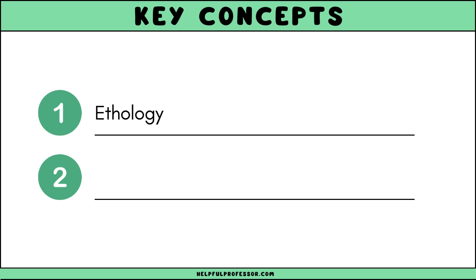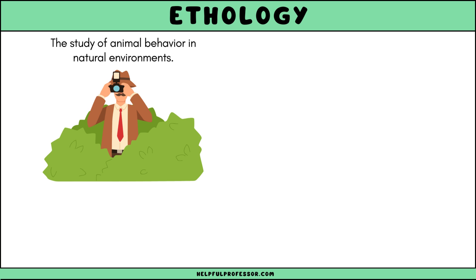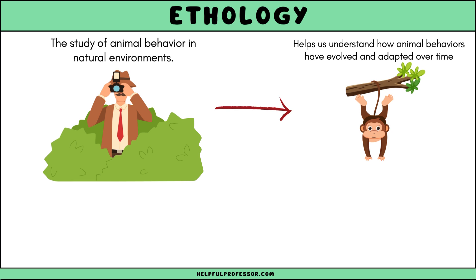The first key concept is ethology — the study of animal behavior in natural environments. This concept emphasizes observing animals in their natural habitats to understand how their behaviors have evolved and adapted over time.